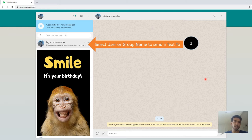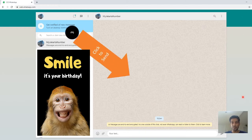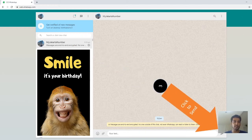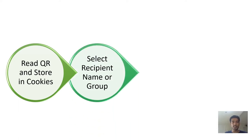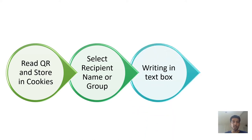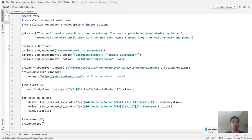You can select either a recipient number or a group name from the left pane. To summarize, there are four steps: first, reading the QR code and storing it in cookies; second, selecting the recipient name or group name; third, writing the text message in the text box; and fourth, clicking the send button to send the message successfully.